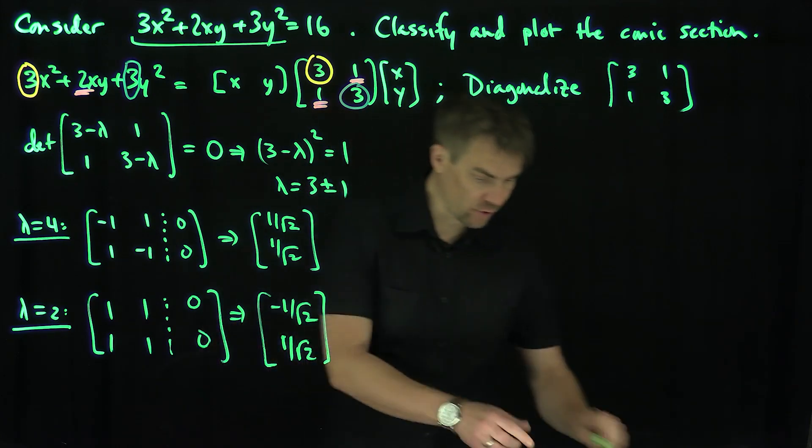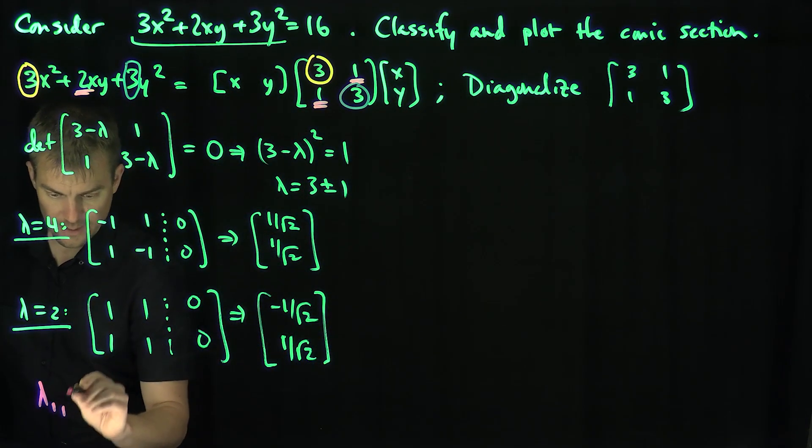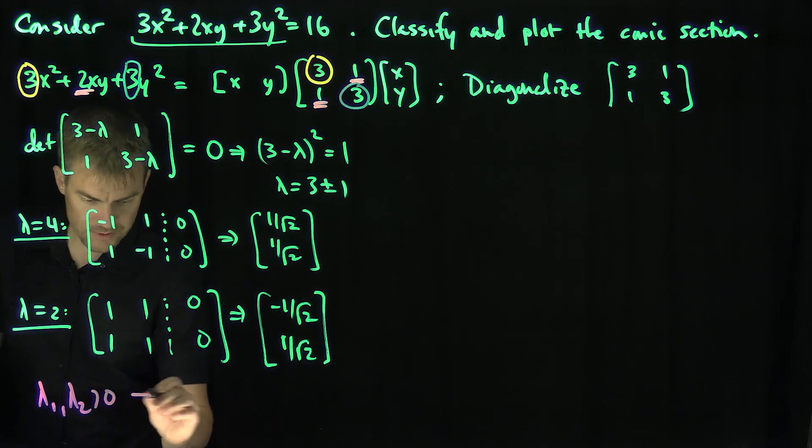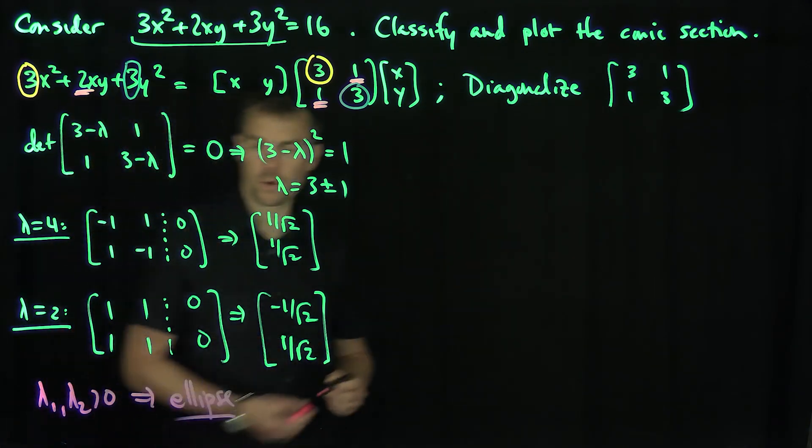Now the key feature is that we have two positive eigenvalues. So λ₁ and λ₂ > 0 means that we're going to get an ellipse. Our conic section is an ellipse. Excellent.